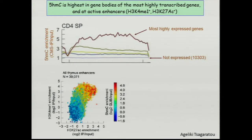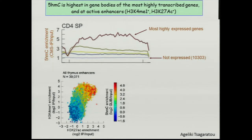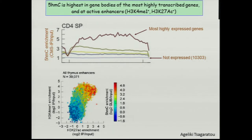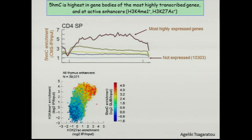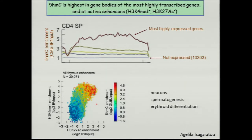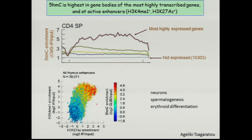If you look at enhancers marked by K4Me1 and K27 acetylation, the color gradient gives you how much 5-HMC there is in these enhancers. It's the most active enhancers — defined by high levels of both marks — that have the highest levels of 5-HMC. These are all highly transcribed regions of the genome, gene bodies as well as active enhancers. This has been shown in T cells, neurons, during spermatogenesis, and during erythroid differentiation, so it's true in many different cell types.